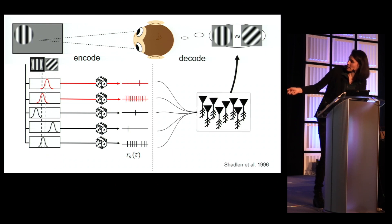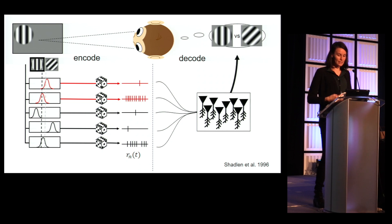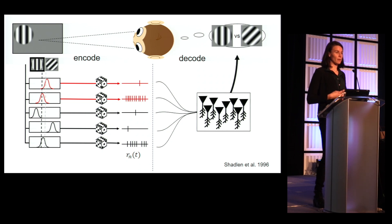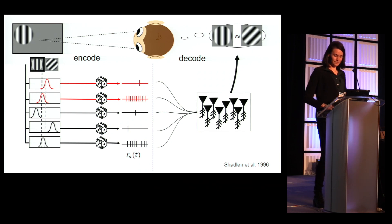Presumably, this will be what the monkey bases its decision on. Now, while encoding is well studied, we know relatively little about how accurate and flexible decoding is achieved by a population of cells to allow for this behavioral performance that we see.